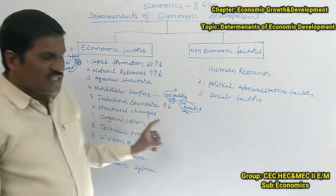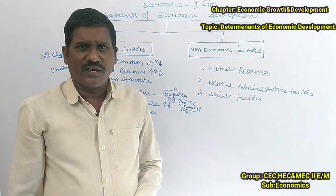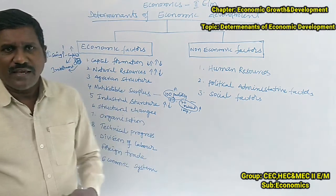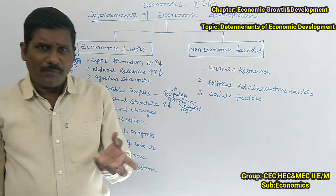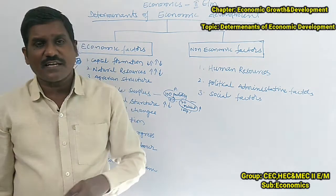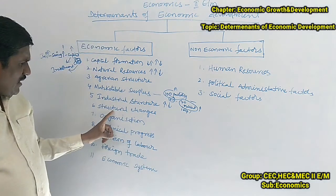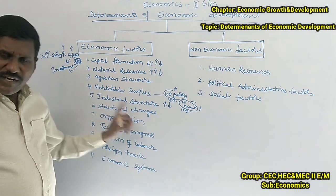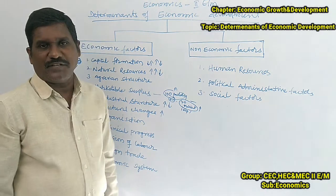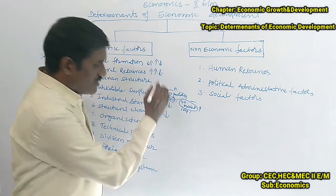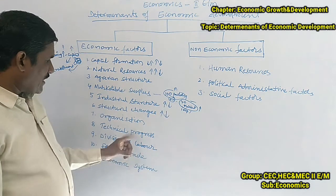The sixth factor is structural changes. Agriculture, the industrial sector, and the service sector all need to develop. People who depend on agriculture should migrate to the industrial and service sectors, and their attitudes need to change. When structural changes increase, economic development becomes possible. A low level of structural change leads to low economic development.